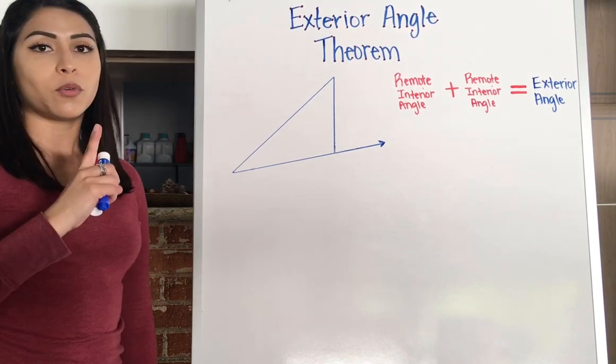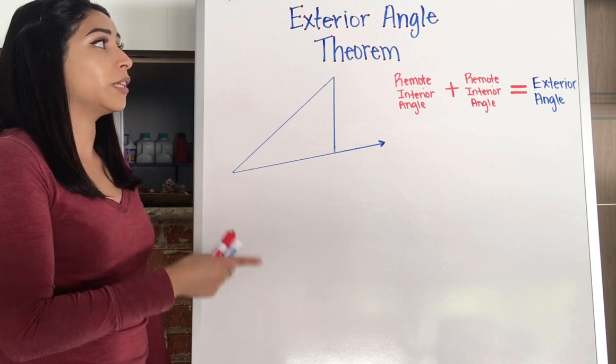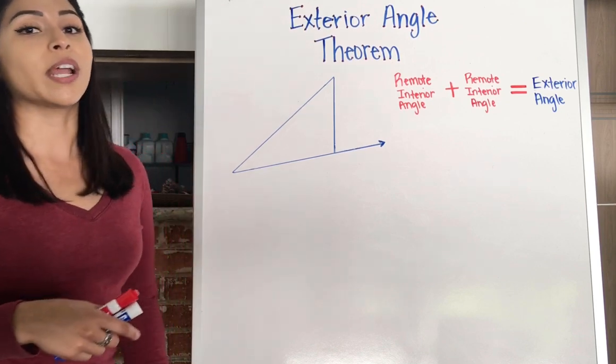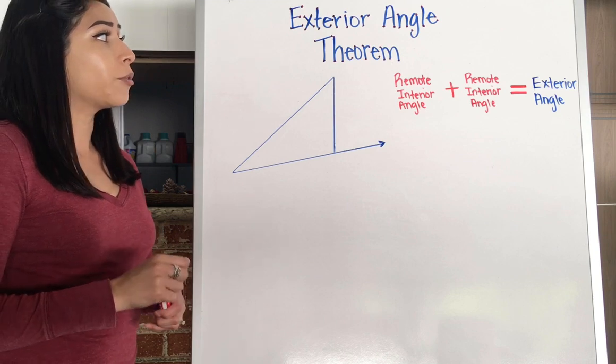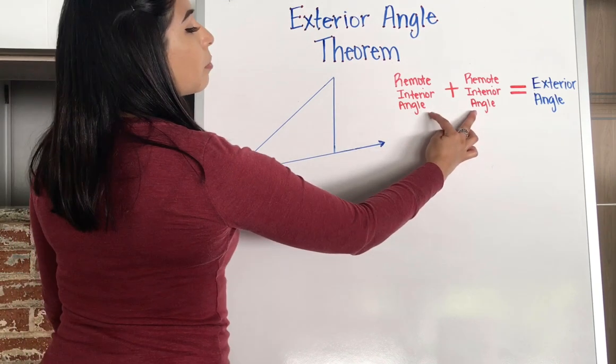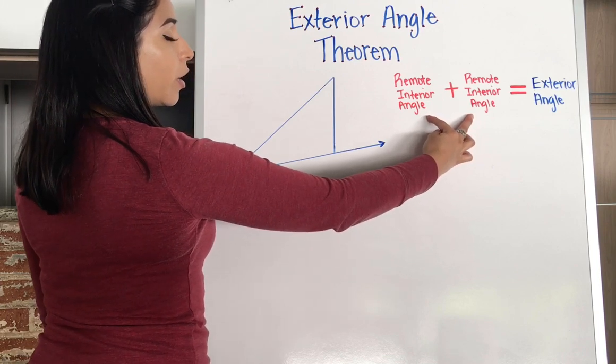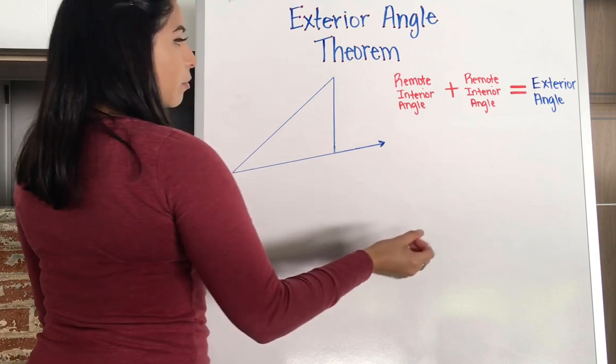Okay, so one more triangle theorem here. This one is called exterior angle or extended angle theorem. And the exterior angle theorem says that if I add up my two remote interior angles, it will equal the exterior angle.